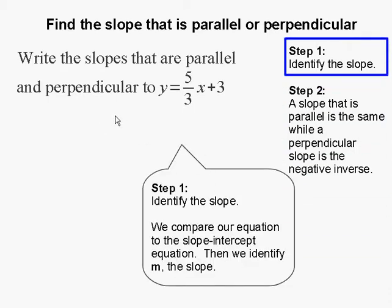Step 1, identify our slope. In order to do so, we compare it to our slope-intercept equation. And m is our slope, so 5 thirds is our corresponding value. And that is our slope.